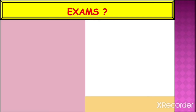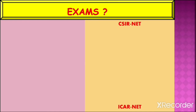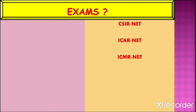Now which exams are there to become a microbiology scientist? First, you can qualify CSIR NET and join a CSIR Institute as a scientist. Then ICMR NET. Also the GATE exam, which is conducted by the IITs, and you can join an IIT as a scientist.